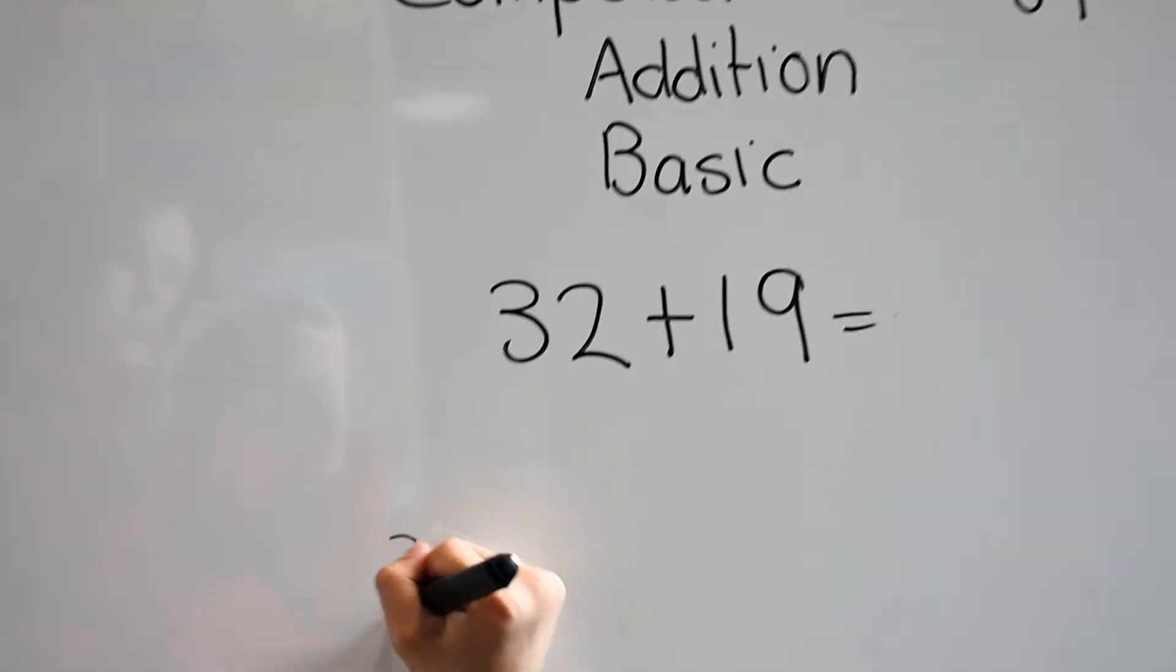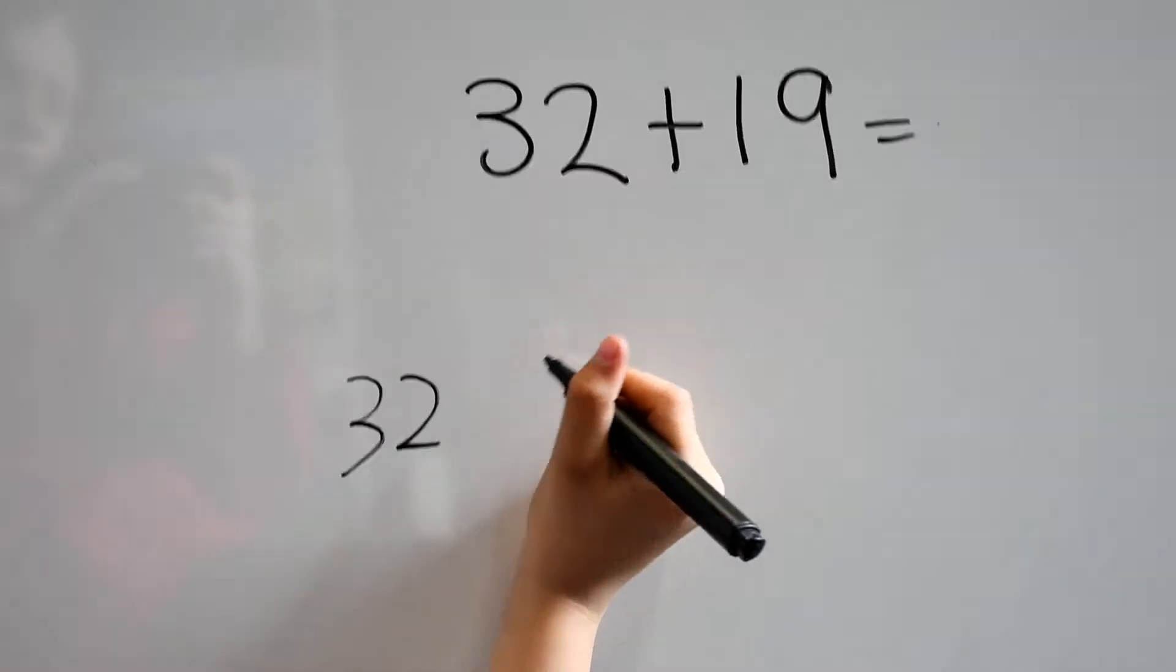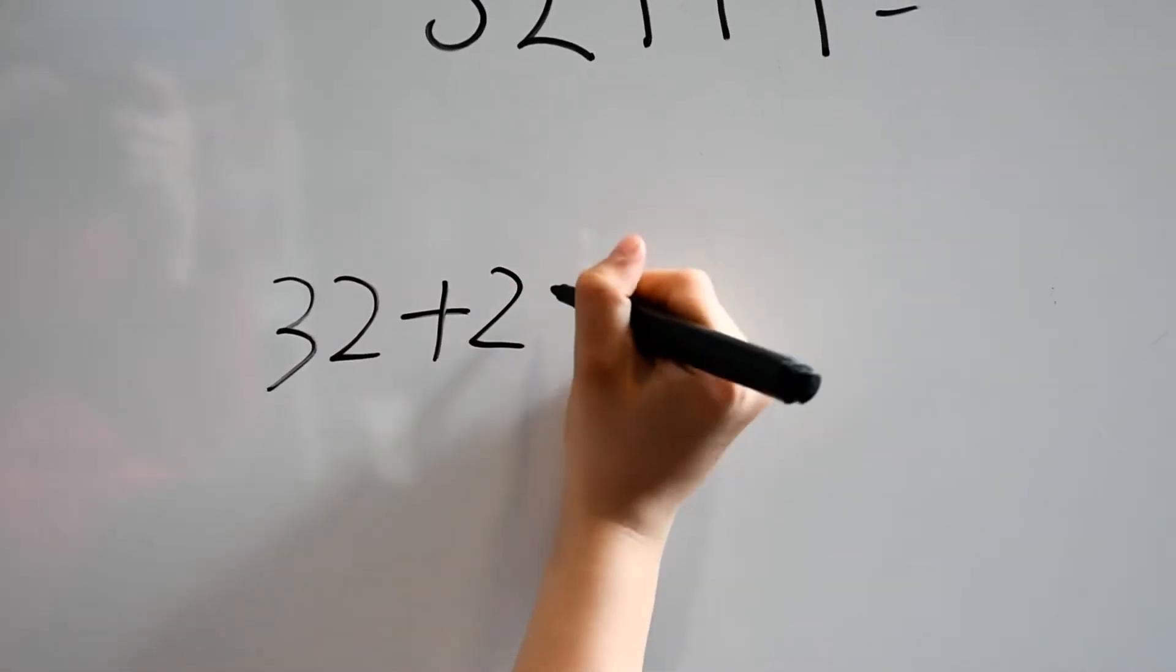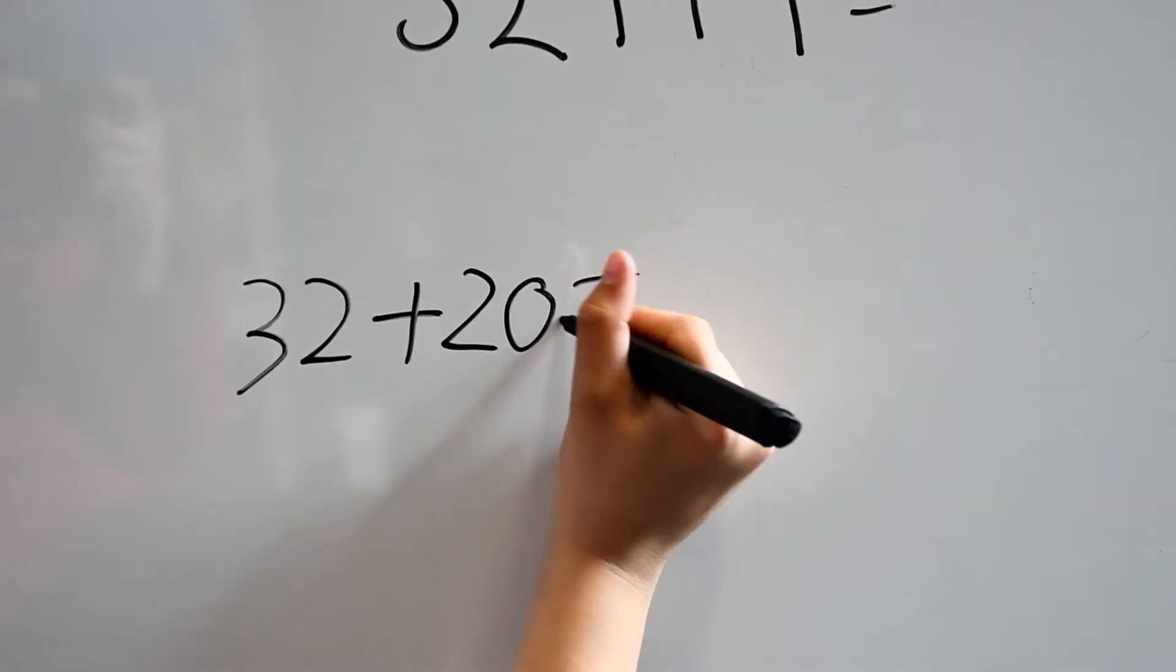We start with 32 because it's the bigger number. Then we add 20, which equals 52.